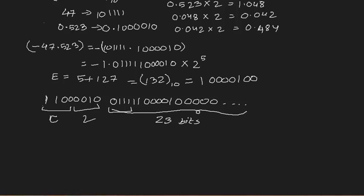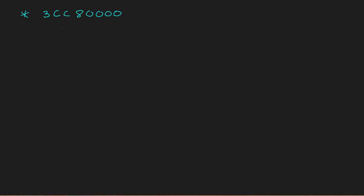Now we'll do the reverse: convert a hexadecimal IEEE floating point value back to decimal. First, convert each hex digit to its 4-bit binary equivalent. We get 0011, then 1100, then 1000, and then the rest are zeros. Now, the first bit is the sign bit — here it's 0, so it's a positive number.